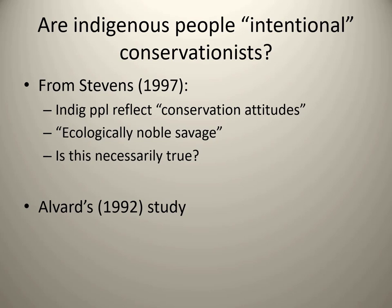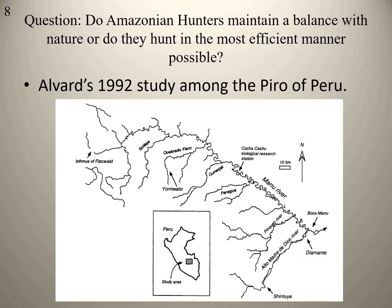Are indigenous people automatically intentional conservationists in the same way that Western conservationists set up a protected area with the goal of conserving and protecting nature? We'll explore this through a study done by Alvard in 1992. The main question he sought to answer was: do Amazonian hunters maintain a balance with nature? Are they intentional conservationists, or do they hunt in the most efficient manner possible? He looked at hunting among the Piro of Peru, who are riverine-oriented in the Amazon.